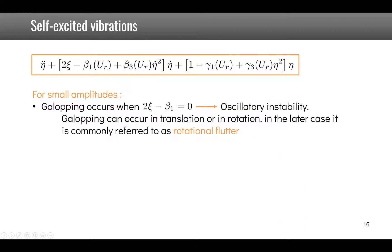And this is when a phenomenon called galloping will occur and this galloping can occur in our body in translation or in rotation and in the case that it is a rotational instability it is called rotational flutter.